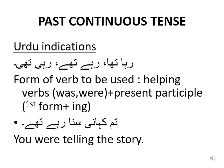After present continuous tense, the next tense is past continuous tense. The Urdu indications for past continuous tense are 'raha tha', 'rahe the', 'rahi thi'. The main verb used is the same as in present continuous — the present participle. The only difference is in the helping verbs: instead of 'is', 'am', 'are', we use 'was' and 'were'. The sentence 'tum kahaani suna rahe the', ending at 'rahe the', translates as 'you were telling the story'.